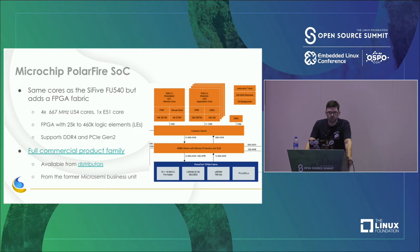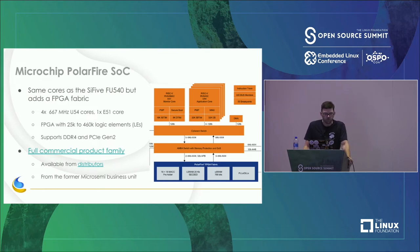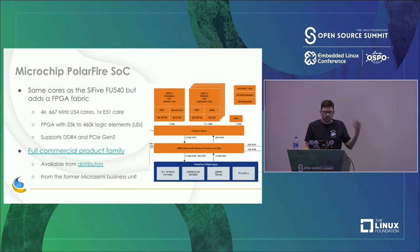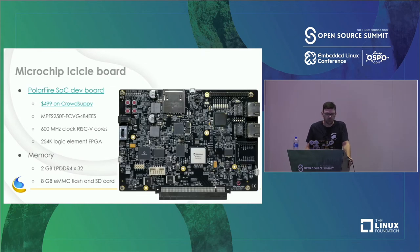More recently, Microchip has the PolarFire SoC — the same quad-core complex as the SiFive Unleashed SoC, but with FPGA fabric added, plus support for DDR4 and PCI Express. It's a full commercial product family from Microchip — available in distribution with good public documentation. This came from the former Microsemi business unit. Last year they released the Icicle board for $500 on CrowdSupply — half the price of the Unleashed board and adds a big FPGA, though still expensive for some use cases.